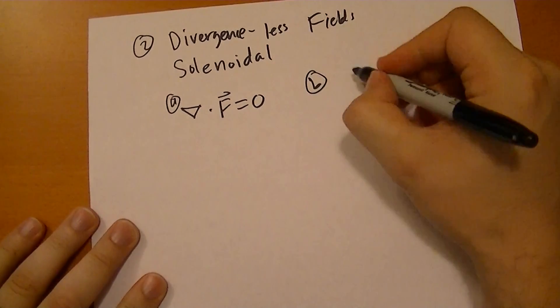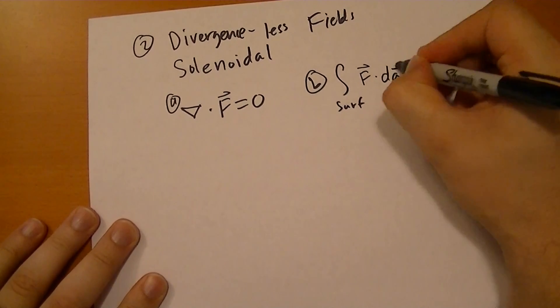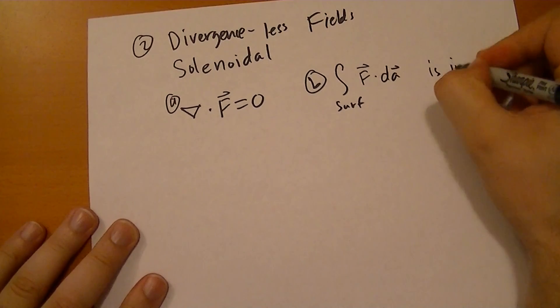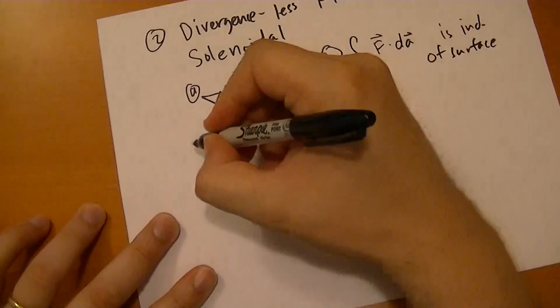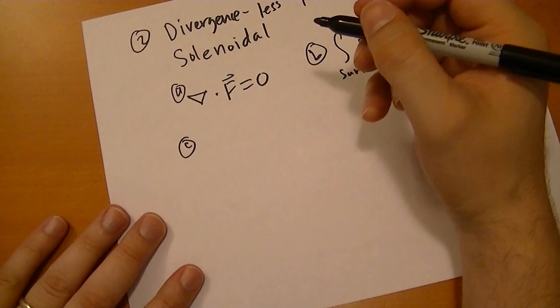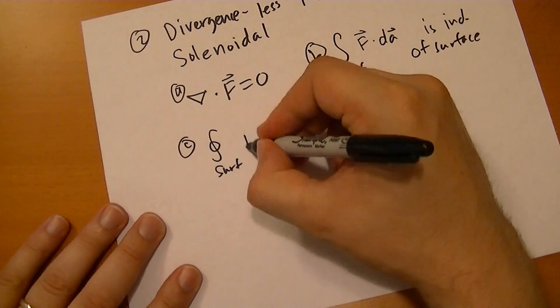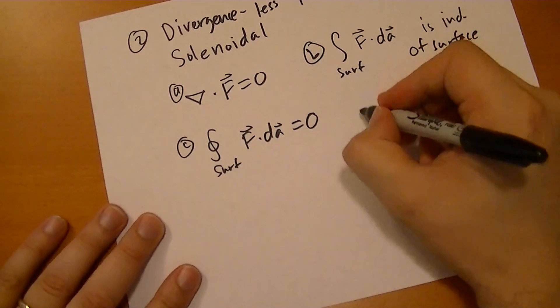Another is that the surface integral of F vector dot dA is independent of the surface. Another is that the closed surface integral of F vector dot dA is always equal to zero for any closed surface.